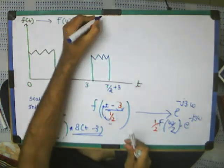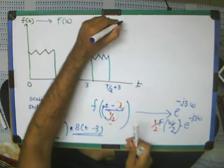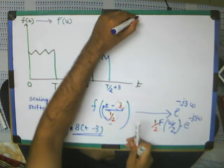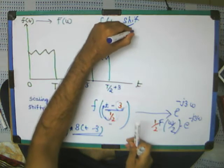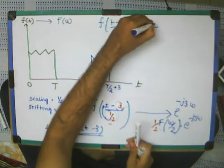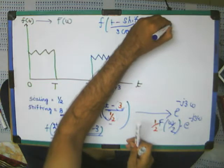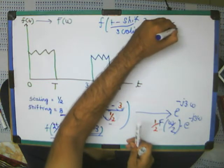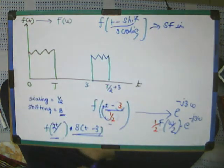This is the hex. So F into T minus shifting parameter divided by scaling. It's the standard form in which you have to convert. Standard form in which you have to convert. So for now.